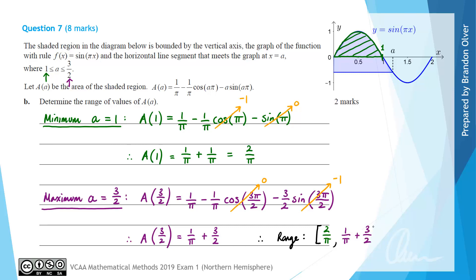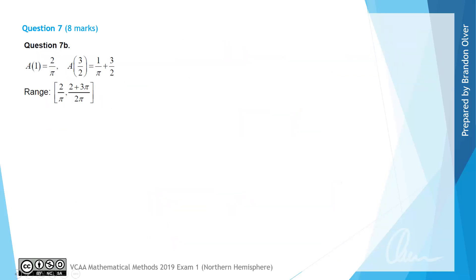Because both a-values were included in the restriction, we use square brackets for the range. The examiner's report confirms the range was calculated the same way — substituting 1 and 3/2 into the function — with the only difference being they expressed the upper limit with a common denominator.